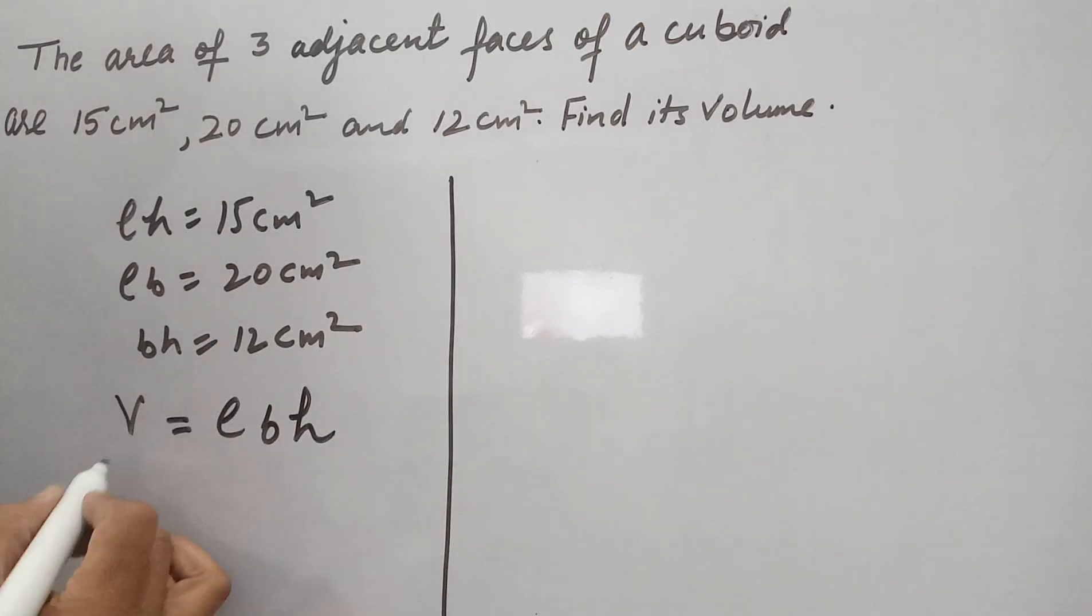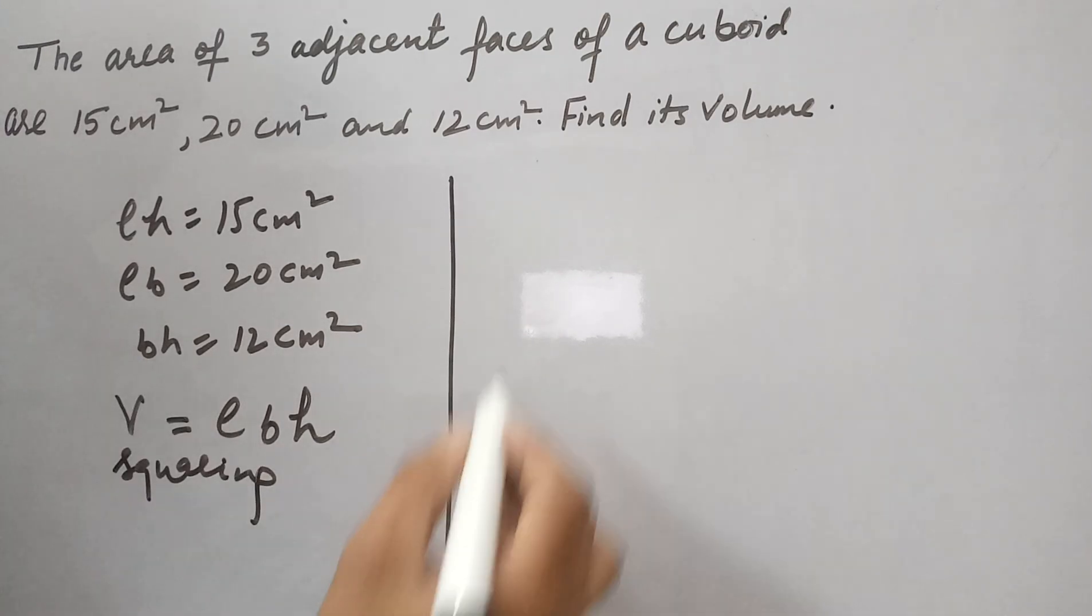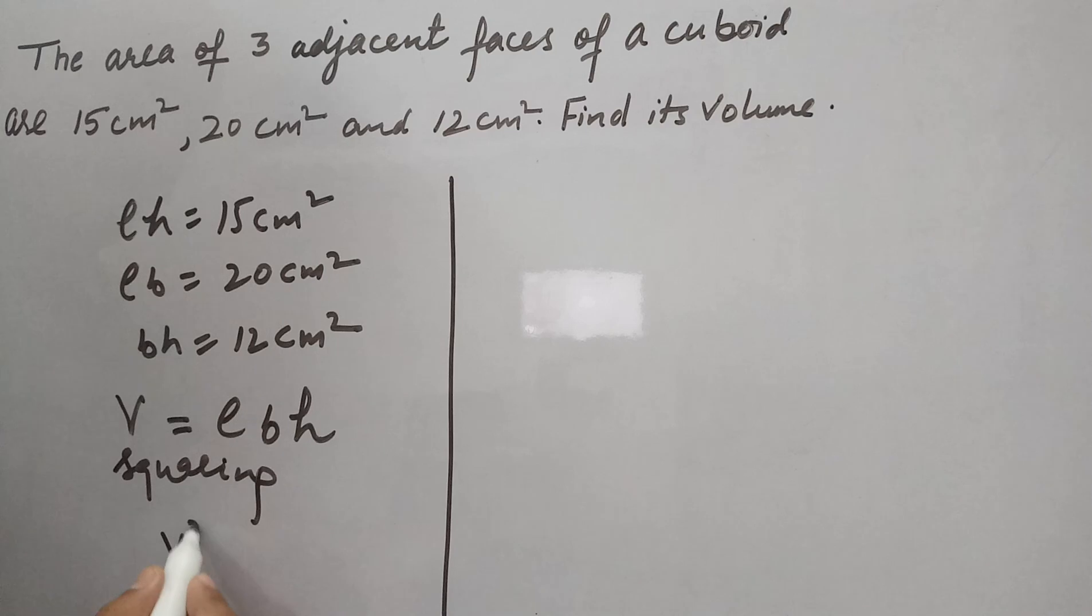So we square this equation. Squaring, it becomes V² equals L² times B² times H².